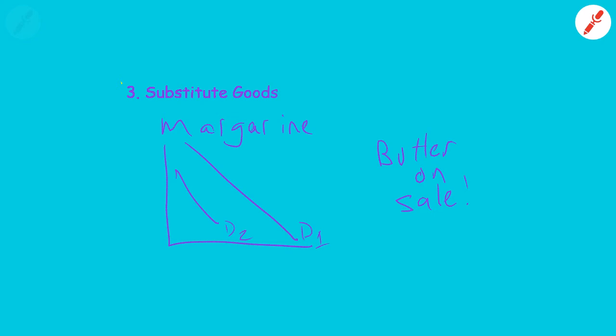The next related good we're going to talk about is complementary goods. Complementary goods are things that are used together with the good that you're graphing. For instance, peanut butter. If jelly goes on sale this week, are people more likely to buy a complementary good that goes with it? Well yeah, of course. Peanut butter sales might go up. Demand might increase, go from D1 to D2 for peanut butter, simply because jelly is on sale.